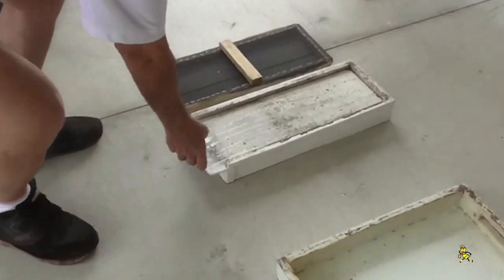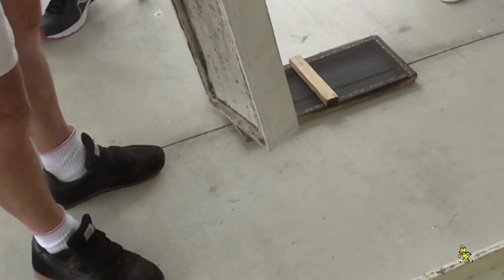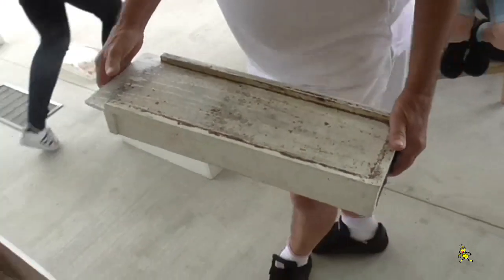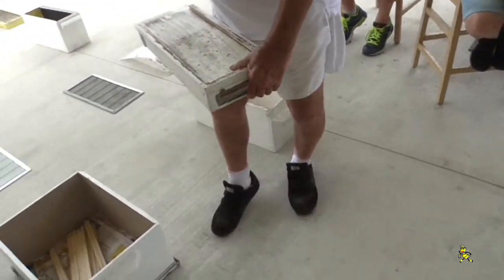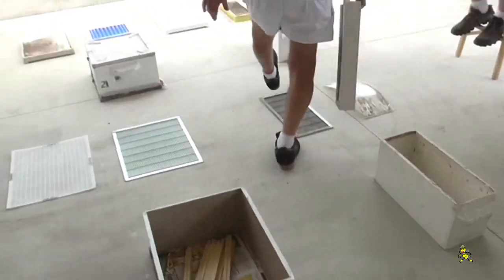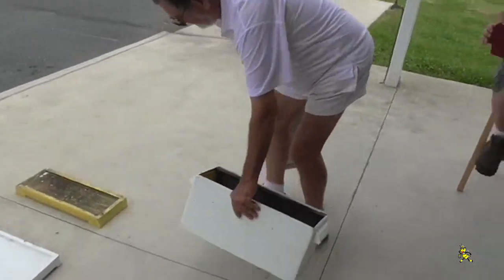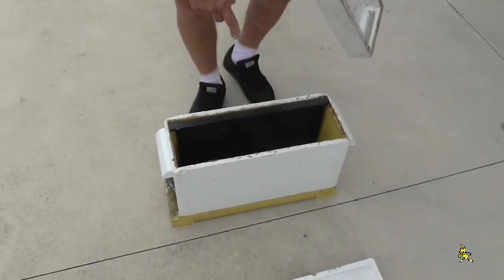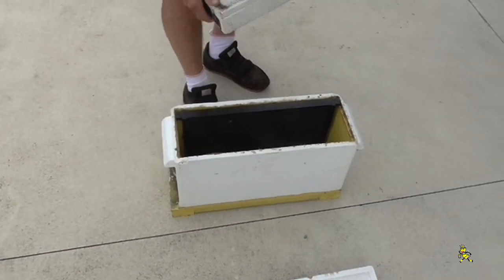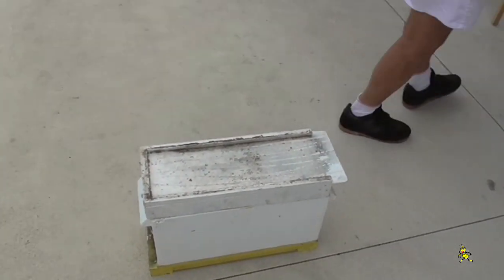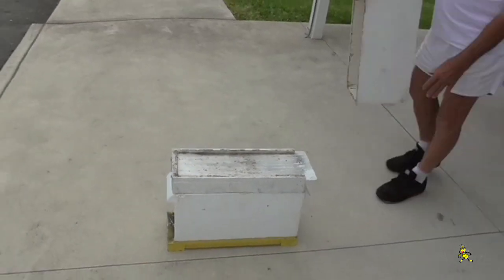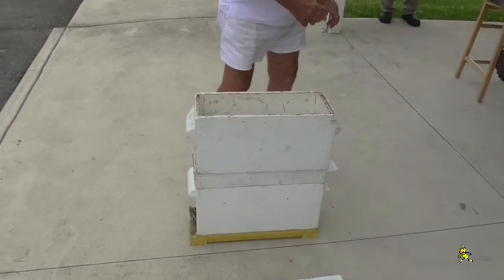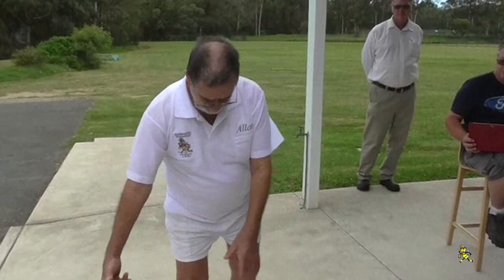Now we've also got these here—this is what we call a lid-come-base, so we can get out on the road. We can have a nucleus hive with an entrance facing that way, then go up a second story with another nuc and a queen facing the other way. When rearing queens, I can have up to 12 separate nucs on my 1800 stands—that's four by three high.